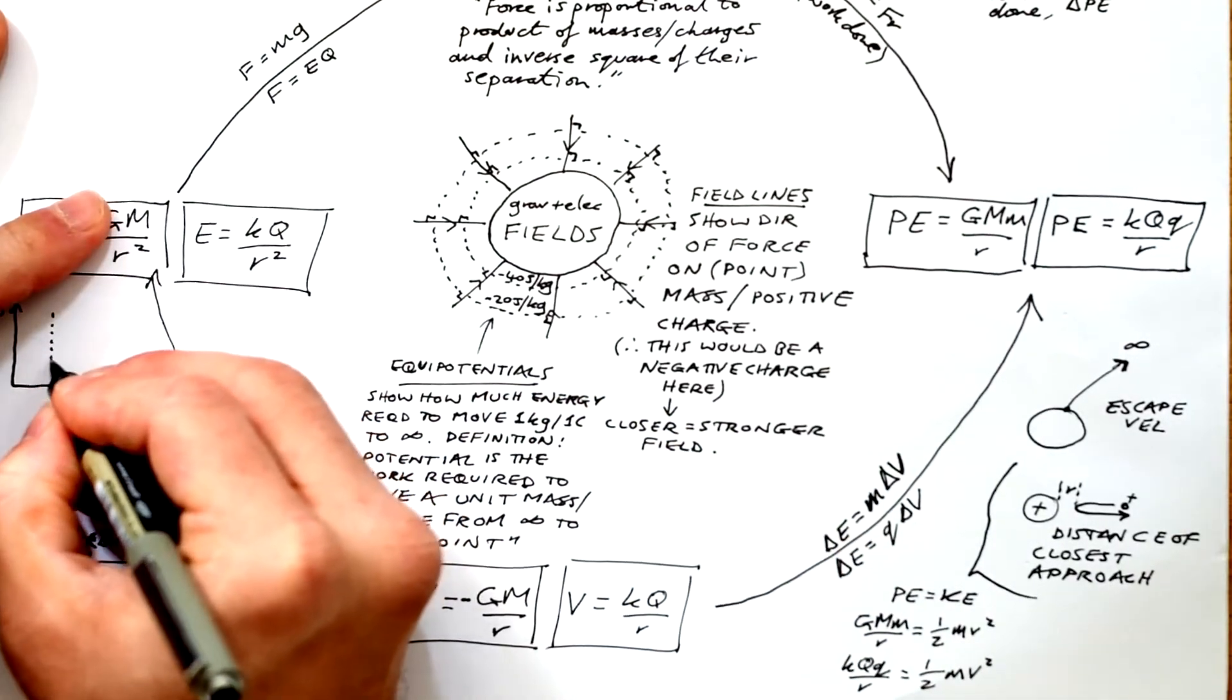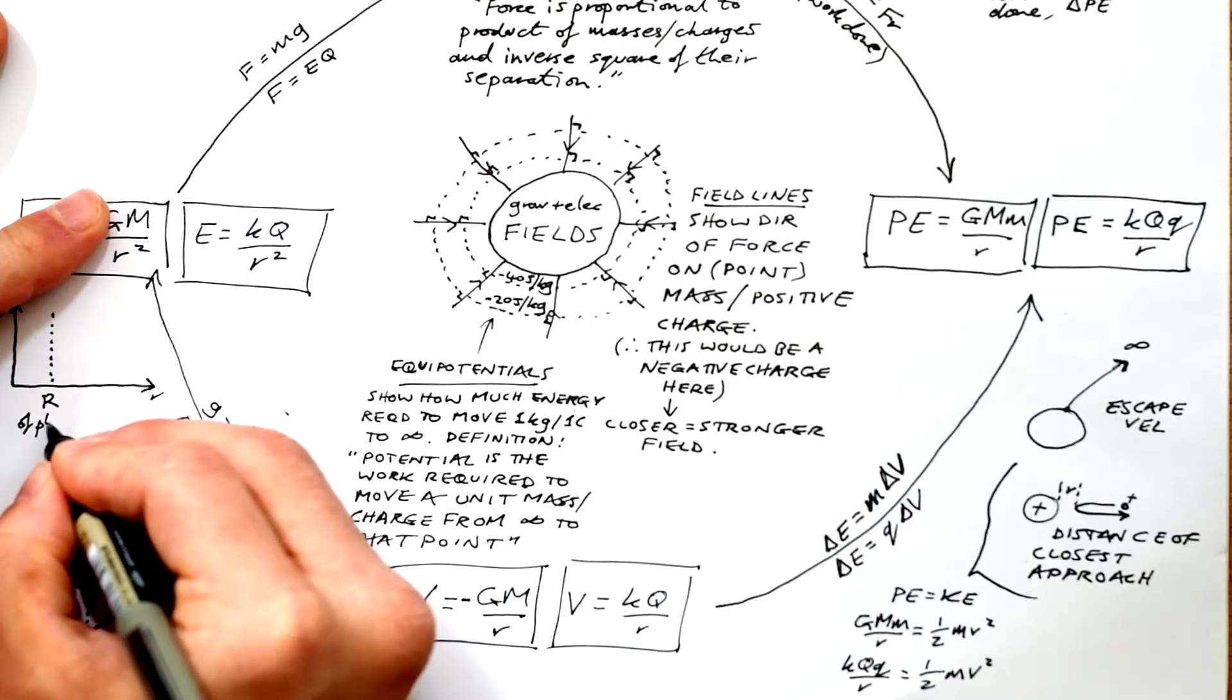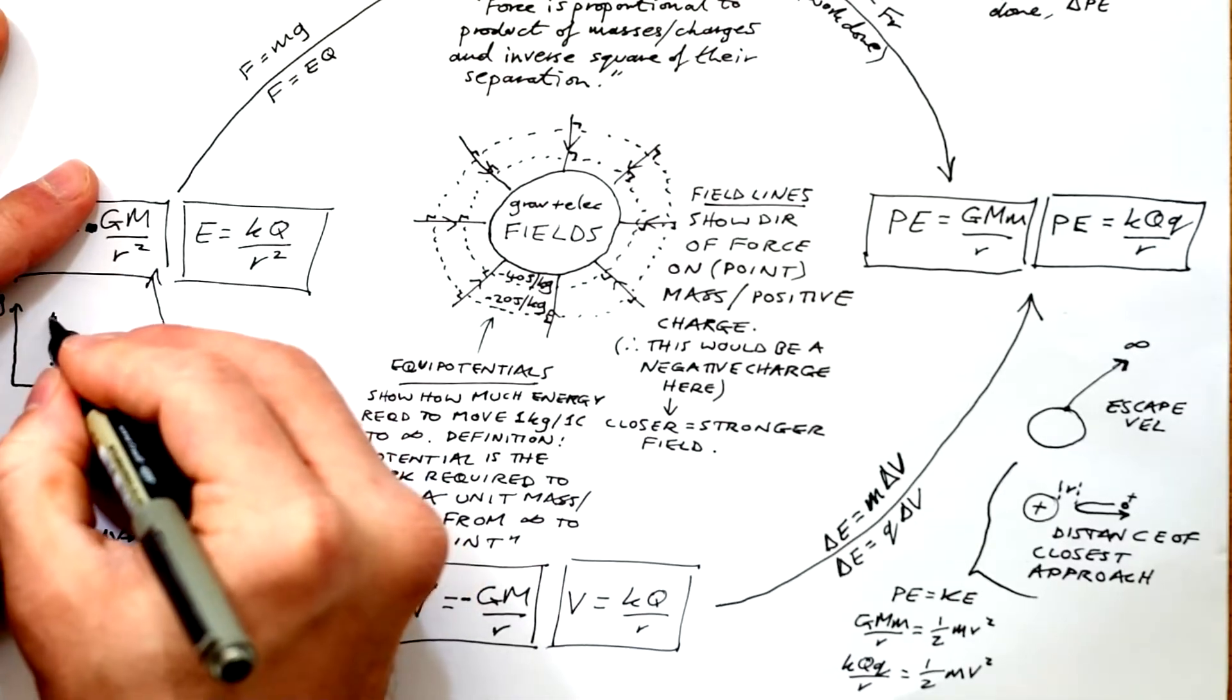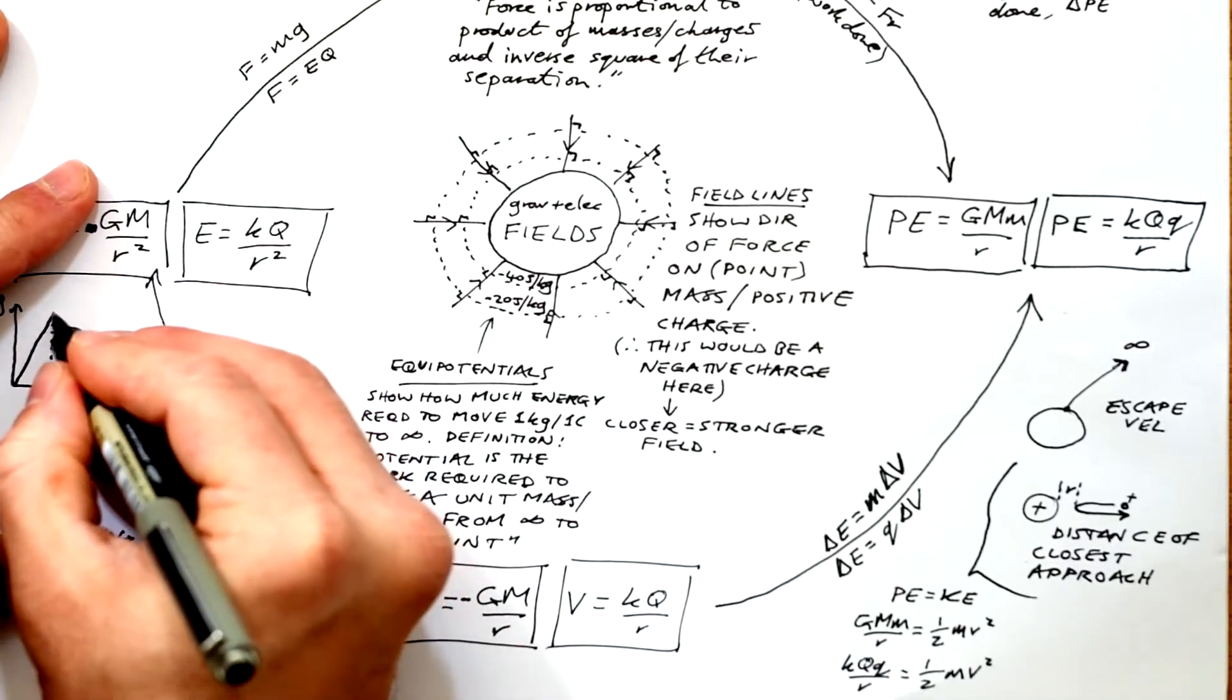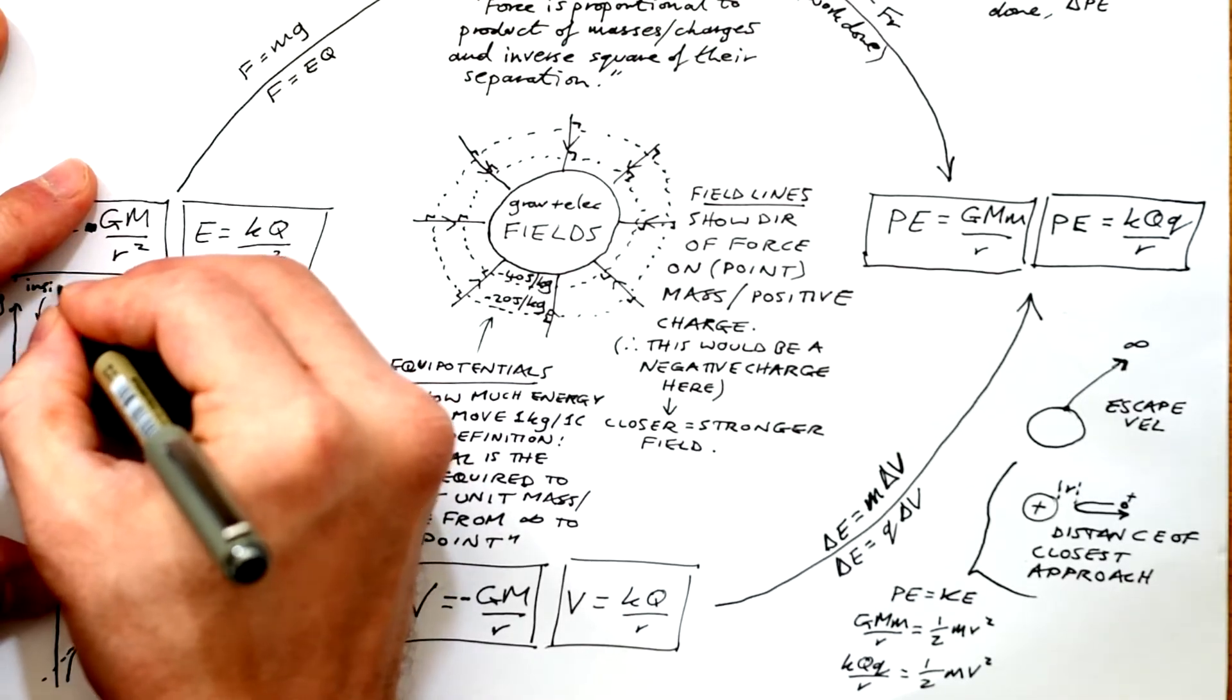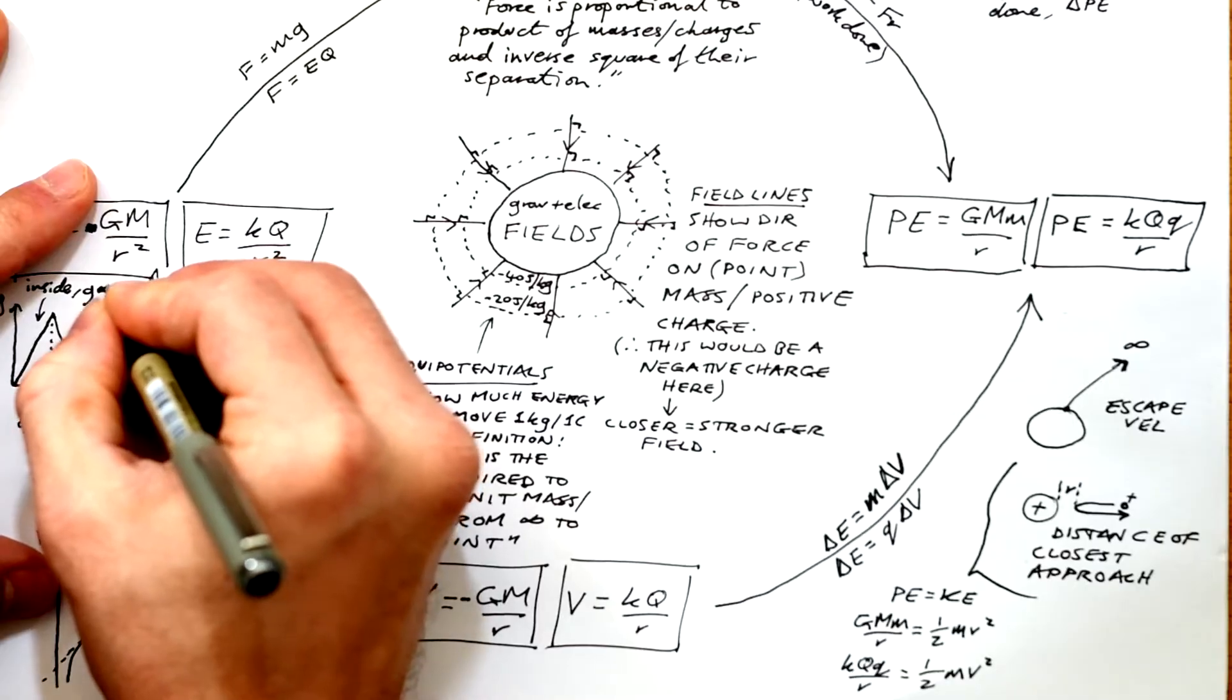Gravitational field strength, if we draw a graph, we can see that that decreases with one over r squared as well, similar to force. But it's useful to know how field strength changes inside a planet. And it changes linearly because g is proportional to r. And we know it has to go down to zero ultimately, because when we get to the central planet, we're being pulled in all directions equally.